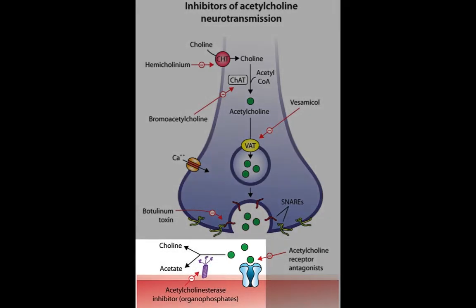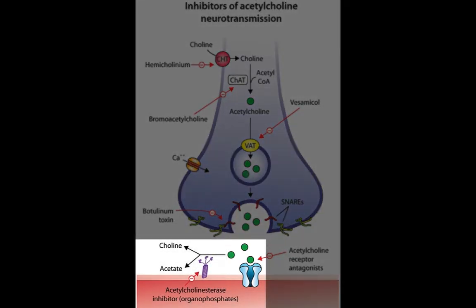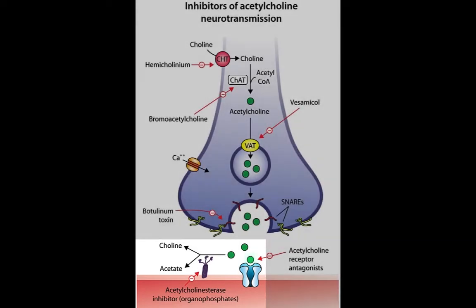Organophosphates are substances widely used as pesticides in agriculture. They are irreversible inhibitors of acetylcholinesterase, causing a continuous effect of acetylcholine until new enzyme is synthesized. Organophosphate poisoning is treated with atropine and pralidoxime, which is a drug that can bind organophosphates and detach them from the enzyme.